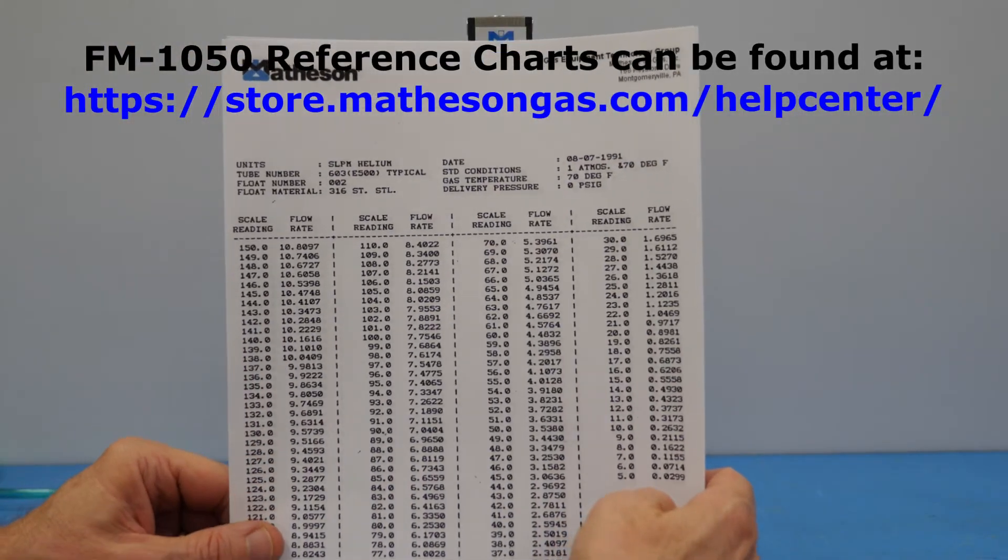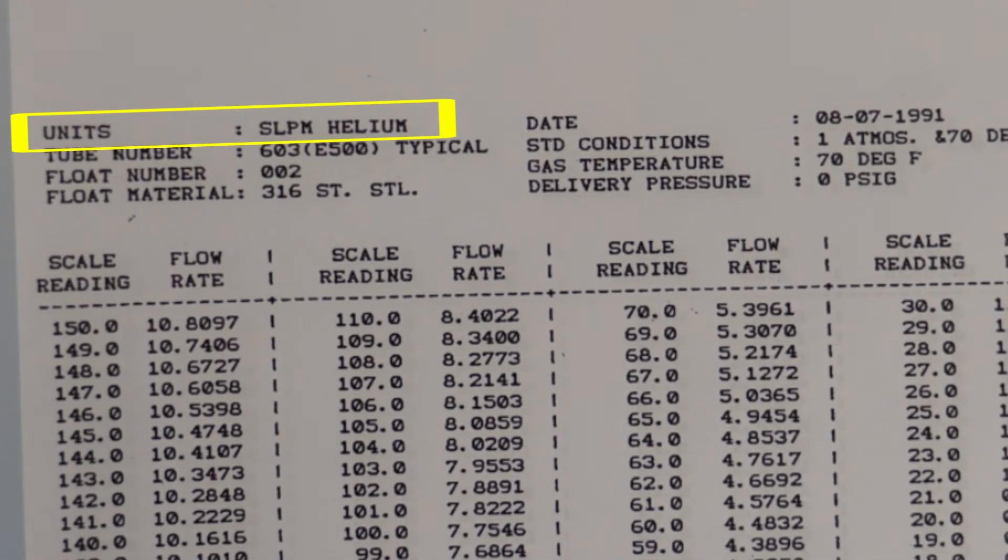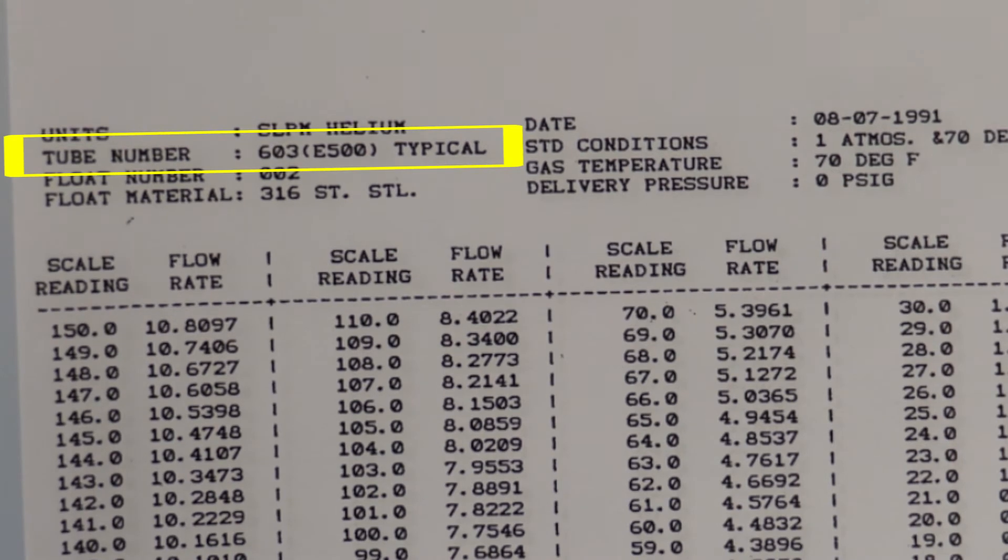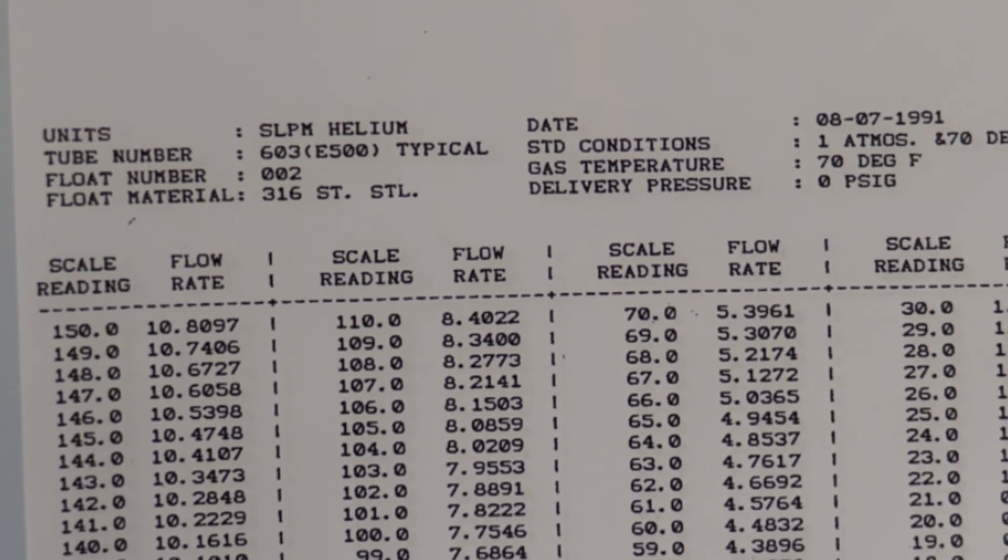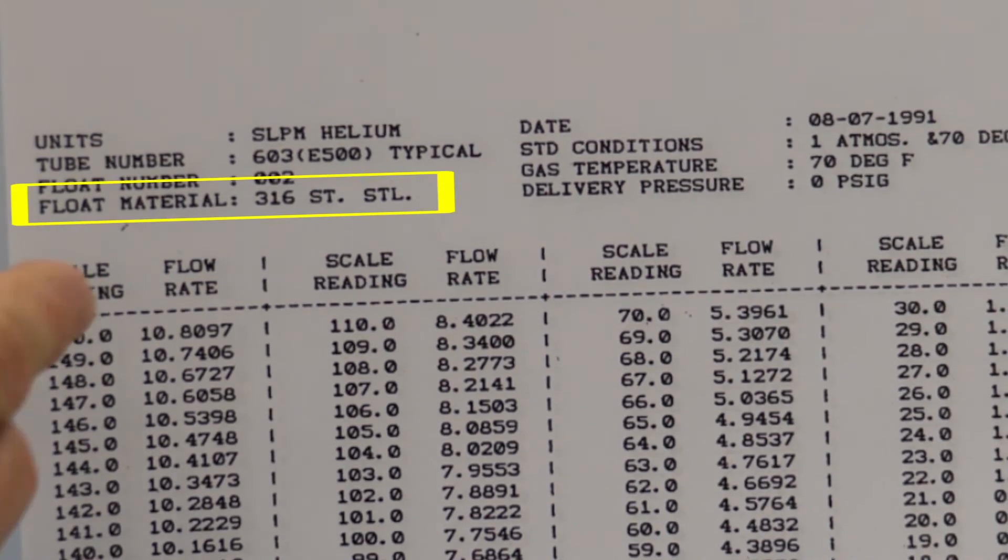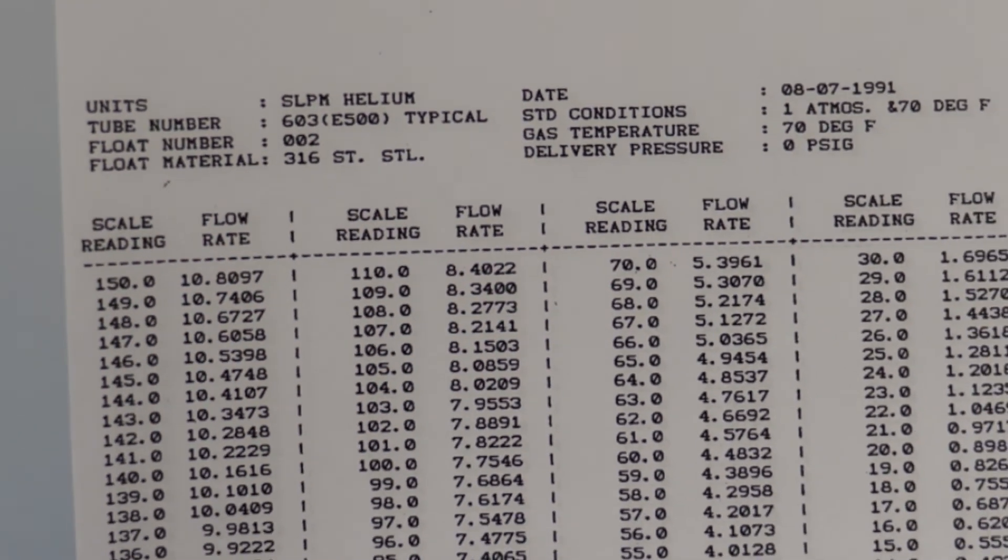Again we take a look at our flow curve. In this case, the units are standard liters per minute helium. The tube number is 603 E500, which is what we want. That's what we have in our meter. The float material is 316 stainless steel, and the delivery pressure being 0 psi G is what we want.